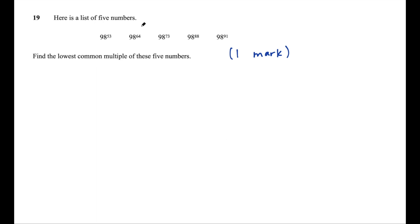This question says, here is a list of five numbers: 98 to the power 53, 98 to the power 64, to the power 73, to the power 88, and to the power 91. Find the lowest common multiple of these five numbers.